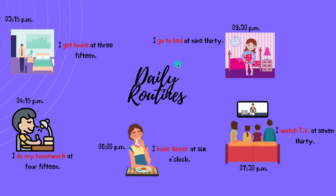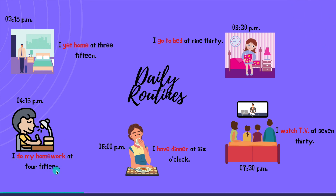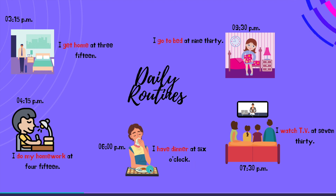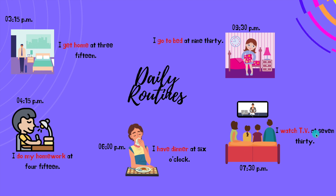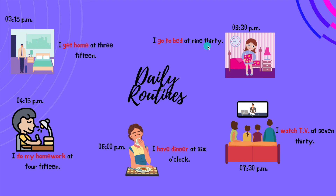Let's continue with the next pictures — daily routines, the vocabulary of unit number 5. I get home at 3.15. I do my homework at 4.15 — all the things I cannot do at school. At 6pm I have dinner. After that, I watch TV at 7.30. And finally, at the end of the day, I go to bed at 9.30.